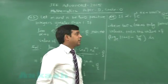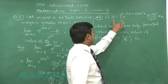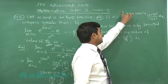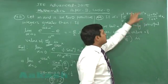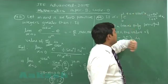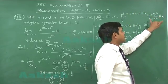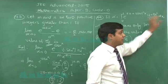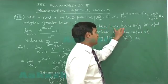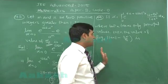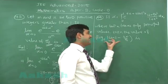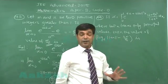Let us go for the next question, that is question number 44. If alpha is integral 0 to 1 e raise to the power 9x plus 3 tan inverse x multiplied with 12 plus 9x square upon 1 plus x square dx, where tan inverse x takes only principal values, then the value of this expression is required, right?